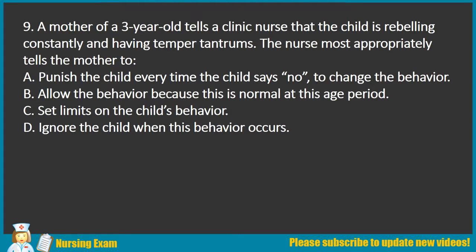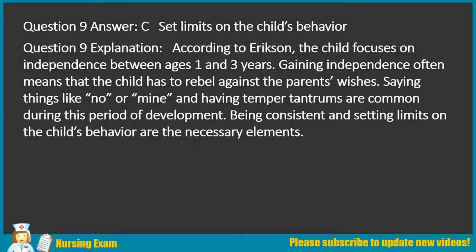Question 9. A mother of a 3-year-old tells a clinic nurse that the child is rebelling constantly and having temper tantrums. The nurse most appropriately tells the mother to: A. Punish the child every time the child says no, to change the behavior. B. Allow the behavior because this is normal at this age period. C. Set limits on the child's behavior. D. Ignore the child when this behavior occurs. Answer: C. Set limits on the child's behavior.